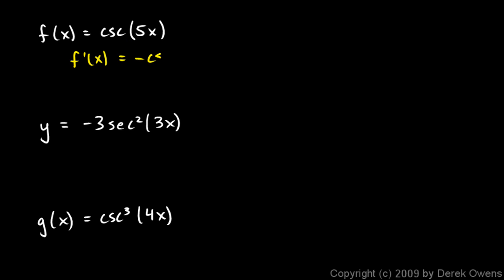The derivative of the cosecant function is negative cosecant x tangent x. So the derivative of cosecant 5x is negative cosecant 5x times the tangent of 5x, but we have an inner function here. We multiply by the derivative of the inner function which is just 5, so I get negative 5 cosecant 5x times the tangent of 5x.